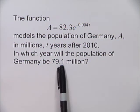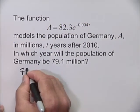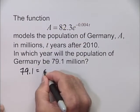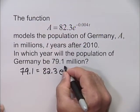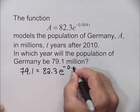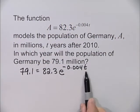We substitute 79.1 for the value of A. So 79.1 = 82.3e^(-0.004t) and we wish to solve for t.